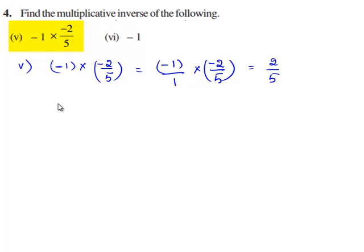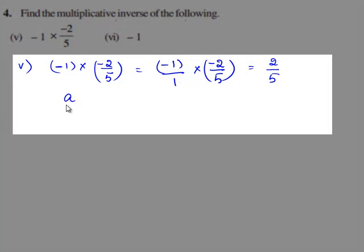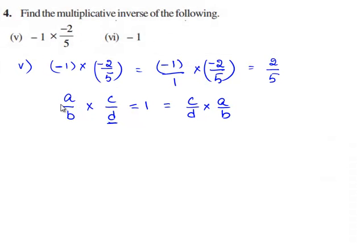So now we need to find the multiplicative inverse of 2/5. For every non-zero rational number a/b, there exists another non-zero rational number c/d such that a/b times c/d is equal to 1, which is equal to c/d times a/b. Here c/d is called the multiplicative inverse of a/b and a/b is called the multiplicative inverse of c/d.